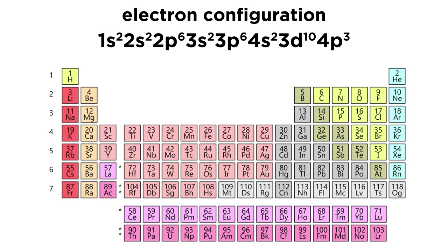1s2, 2s2, 2p6, 3s2, 3p6, 4s2, 3d10, 4p3. We can abbreviate that with argon core if we like, which would be followed by 4s2, 3d10, 4p3.